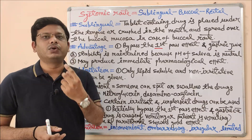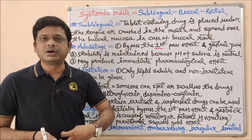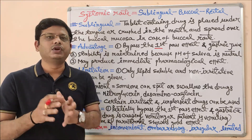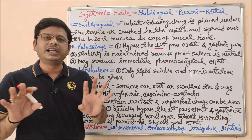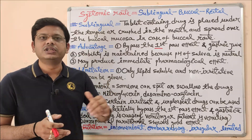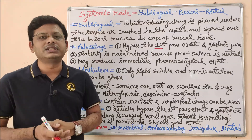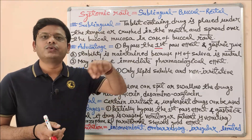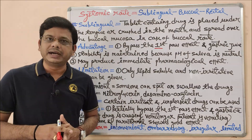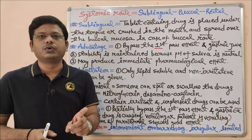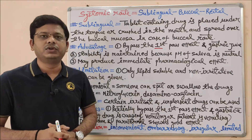Whenever any patient takes a tablet or any other dosage form via oral route, that drug goes through the stomach via the esophagus. After reaching the stomach, it undergoes disintegration and dissolution. If the dosage form is solid it disintegrates; if liquid, it dissolves itself. After disintegration and dissolution, it reaches the small intestine and from there may move to the liver via the portal vein. In the liver, there is a process called metabolism, and as a consequence, that drug may be converted into its inactive metabolite.